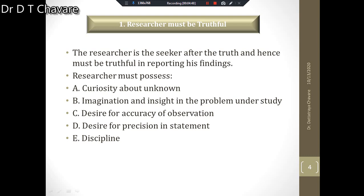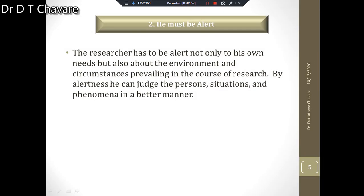These five elements are included in the first quality of truthfulness. The second quality is that the researcher must be alert — not only to his own needs but also about the environment and circumstances prevailing in the course of the research. By alertness, he can judge persons, situations, and phenomena in a better manner.